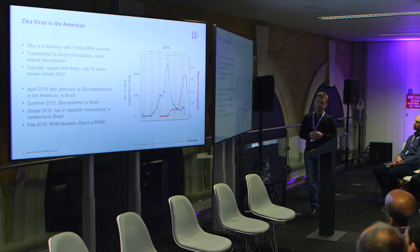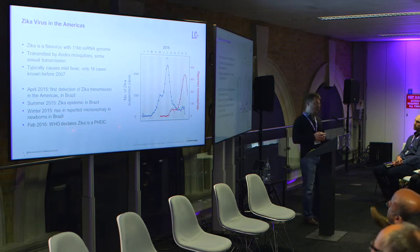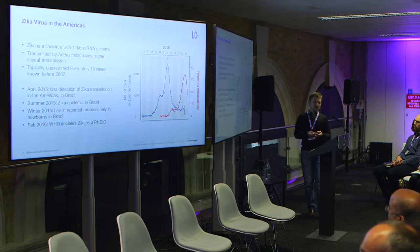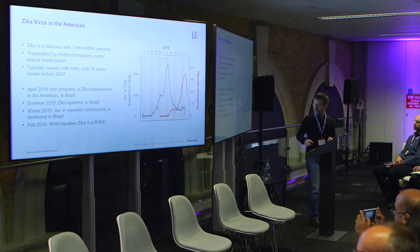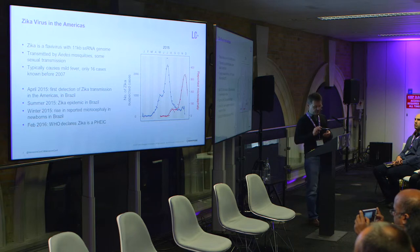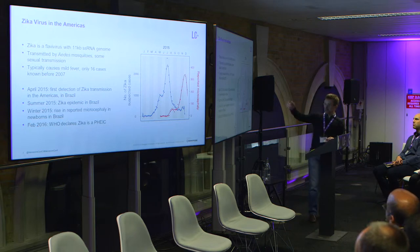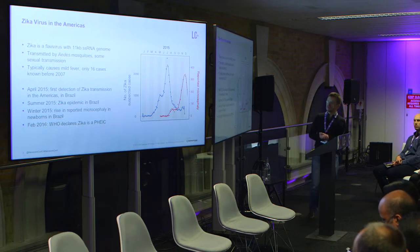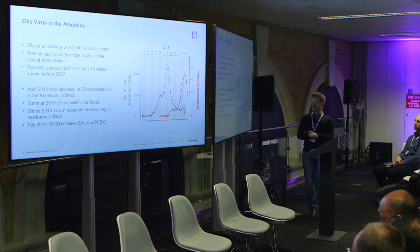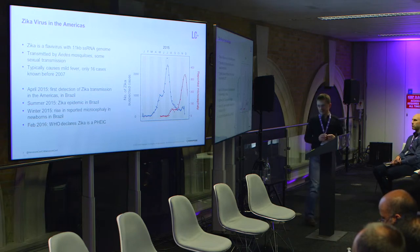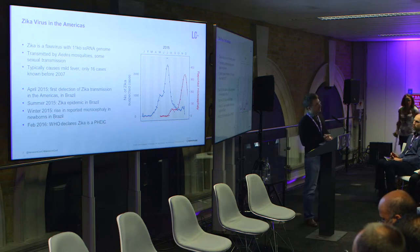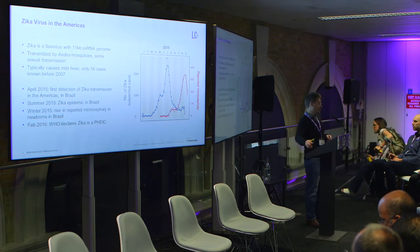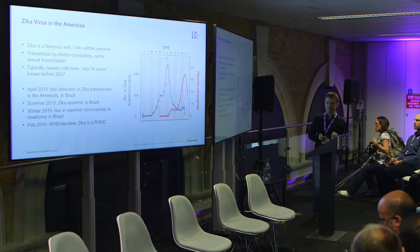That started to change between 2007 and 2015, with increasing cases in Southeast Asia and epidemics in Pacific Islands. In April 2015, there was the first detection of Zika transmission in the Americas. Shortly after, in summer 2015, there was a large Zika epidemic in Brazil — the blue line. Six months later, there was a really worrying rise in recorded severe microcephaly in newborn babies in Brazil — the red line. As a result, the World Health Organization declared it a public health emergency of international concern in February 2016.